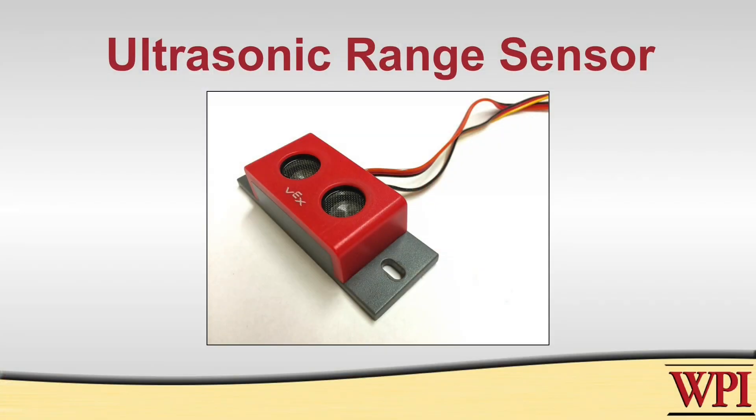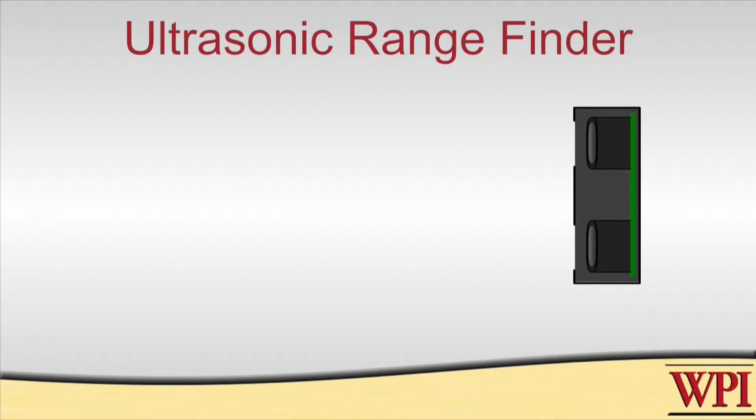I want to now move on to the other type of range sensor that we have. This is the VEX ultrasonic sensor. Ultrasonics for measuring range are commonly found in nature. It's what bats and dolphins use when they're echolocating. We can see that it has two sensing transducers. One is labeled input, the other is labeled output.